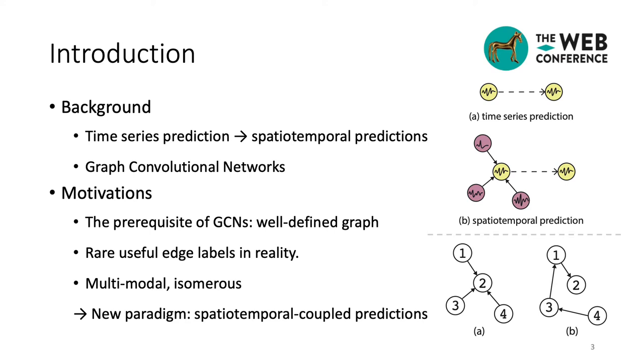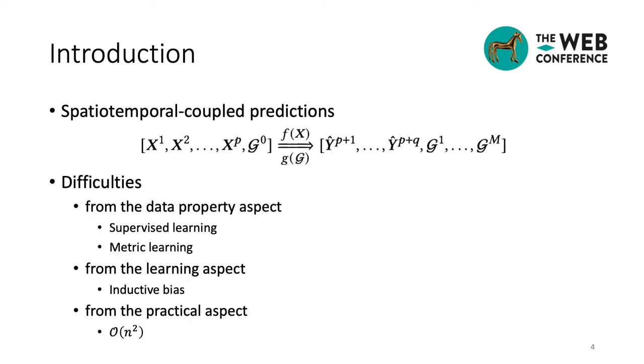One natural idea is to model the temporal patterns and spatial dependencies in a coupling way. Now, let me show you the formal description of the problem, spatiotemporal coupled predictions. Given n time series, the goal is to jointly learn functions f and g to predict the trend of time series, which is hat y, as well as to infer their underlying spatial dependencies, multiple g's, based on the observation records x for all time series and their predefined or randomly initialized spatial dependencies g0.